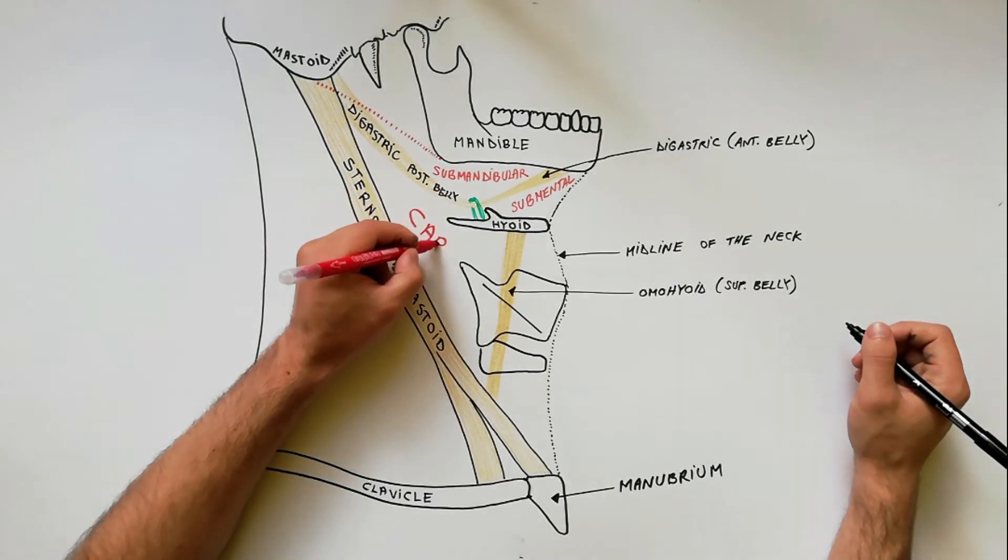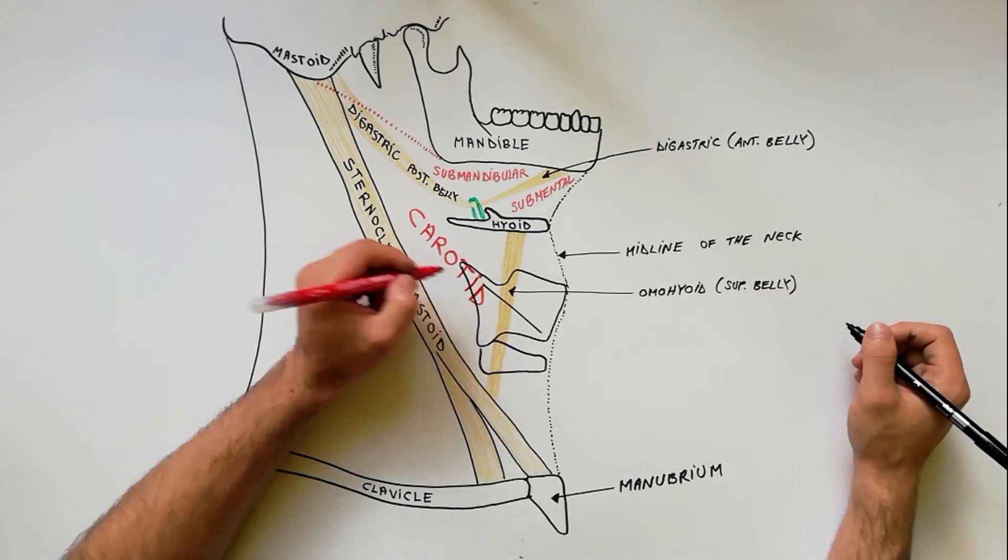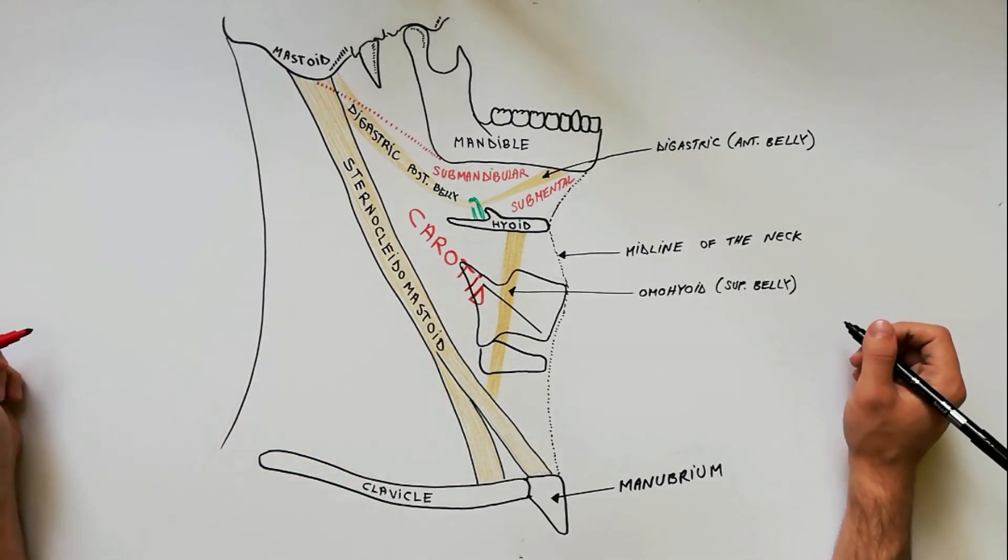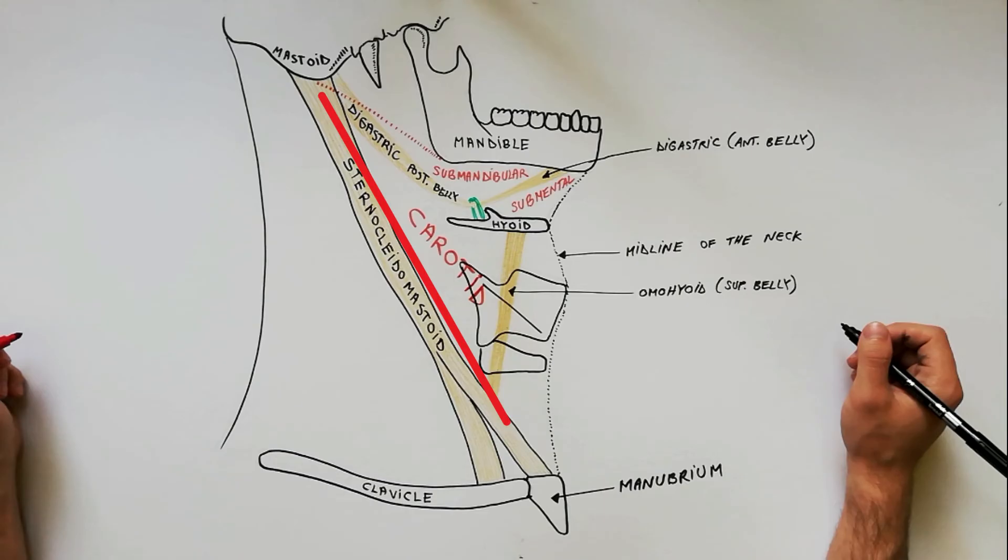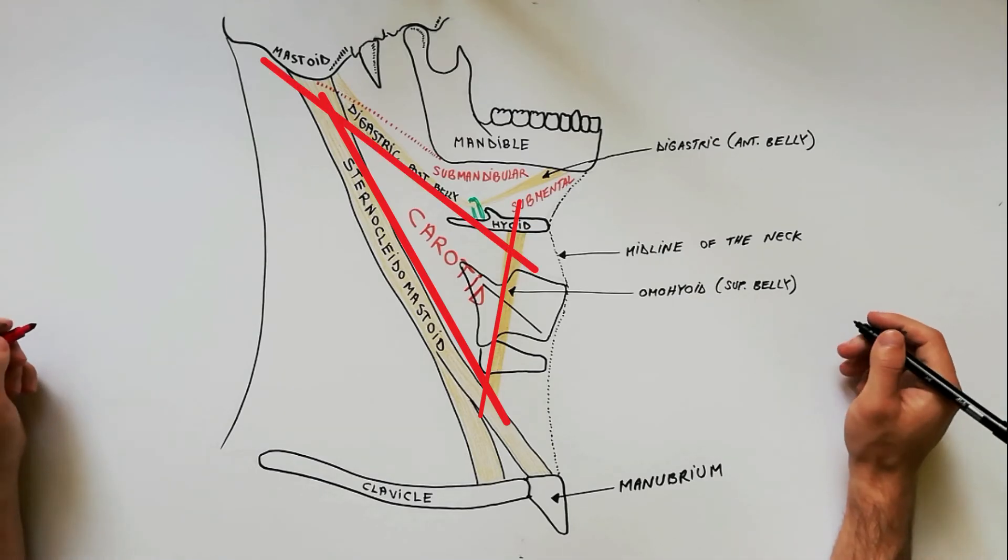The carotid triangle is bounded as follows: posteriorly by the anterior border of the sternocleidomastoid, anteroinferiorly by the superior belly of the omohyoid, and superiorly by the posterior belly of the digastric muscle.